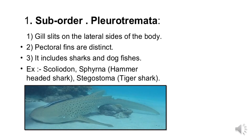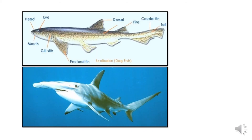Sub-order Pleurotremata: gill slits are on the lateral side of the body, pectoral fins are distinct. This includes sharks and dogfishes. Examples are Scoliodon (dogfish), hammerhead shark, and Stegostoma (tiger shark). You can see the diagram of Scoliodon dogfishes and tiger sharks, where their dorsal and pectoral fins are clearly visible.